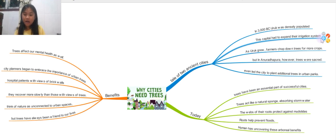And humans have incurred these arboreal benefits for years, for centuries I must say. Trees affect our mental health as well. That may sound something like crazy, but city planners began to embrace the importance of urban trees today. Hospital patients with views of brick walls recover more slowly than those with views of trees. Trees affect our mental health by helping us to be less stressed. Some people like us think of nature as something that's unconnected to urban space, but trees have always been a friend to our life. Trees have been a part of every successful city.